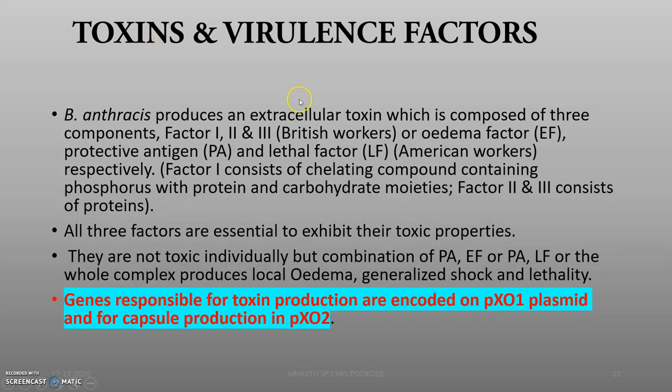Regarding toxins and virulence factors: Bacillus anthracis produces an extracellular toxin composed of three components — Factor 1 (edema factor), Factor 2 (protective antigen), and Factor 3 (lethal factor). Factor 1 combines with Factor 2 to produce edema toxin. Factor 2 combines with Factor 3 to produce lethal toxin.